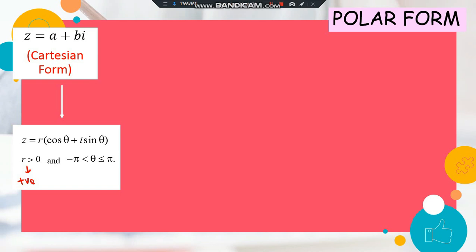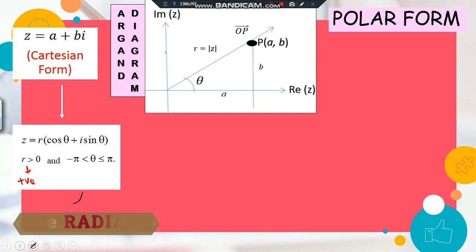Theta is in between negative pi and pi. Just in case you don't remember, pi is actually 180 degrees, so in between negative 180 and 180 degrees — but we always use radians for polar form. Now let's look at our Argand diagram. If you have a point denoted by (a, b), the horizontal axis represents the real part and the vertical axis represents the imaginary part.